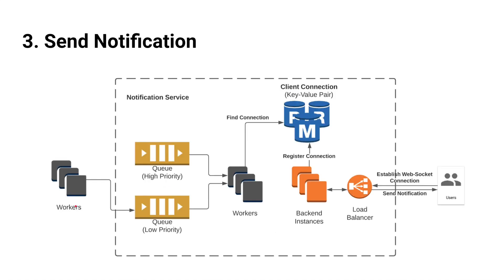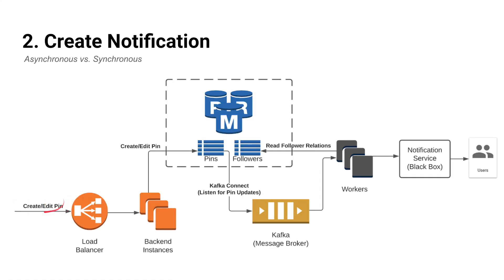To recap: whenever a create or edit request comes in, it hits the load balancer and the request is routed to one of the backend instances. The update is persisted in the database, and since we register a trigger, we get a trigger event whenever there's an update on that table. That update message is published to Kafka on a certain topic. Workers subscribe to that specific topic, and whenever there's a message, they retrieve it — the message contains the updated pin UUID — then they read the follow relationship and create a notification.